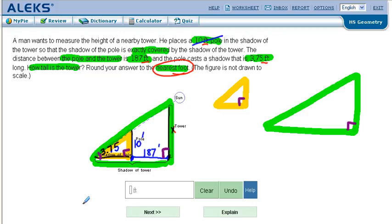And they share this angle here. So we know that they are similar by the shortcut angle-angle similarity. That's important.